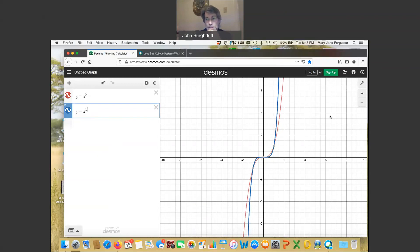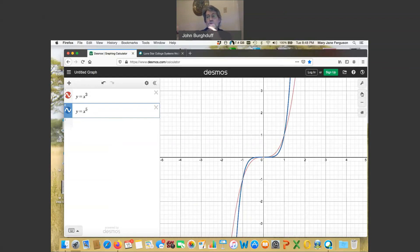But that's actually not the entire story. Let me zoom in a little bit, just close to the origin. And I want to notice a couple things here. Notice that both of these graphs go through the point 1, 1, 0, 0, and negative 1, negative 1. So those points are in common, no matter what that exponent is.